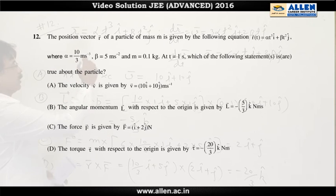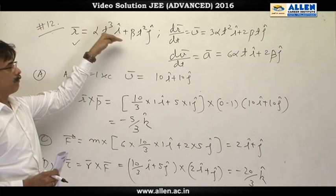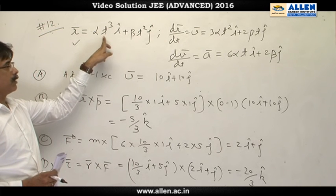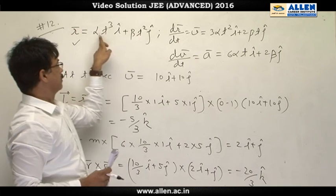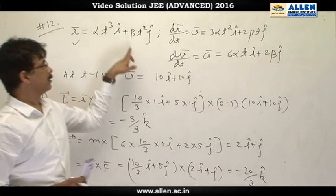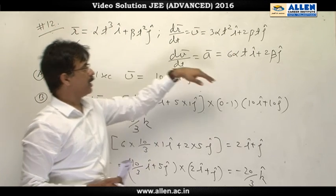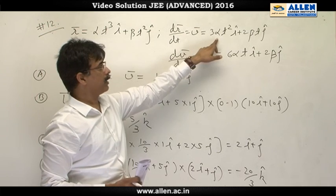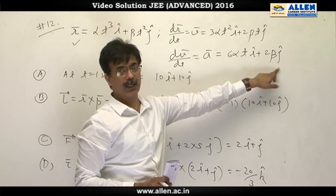Question number 12. Since position vector is given as alpha t cube i cap plus beta t square j cap, by differentiating position vector, we will get velocity vector. On differentiating r vector, we will get velocity vector as 3 alpha t square i cap plus 2 beta t j cap. Once again, when we differentiate velocity vector, we get acceleration vector. On differentiating velocity vector, we get 6 alpha t i cap plus 2 beta j cap.